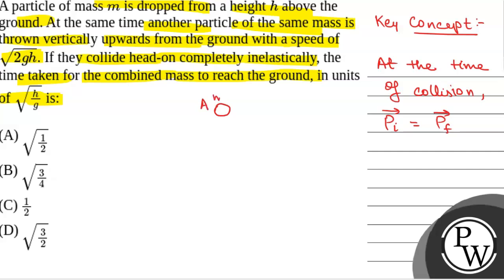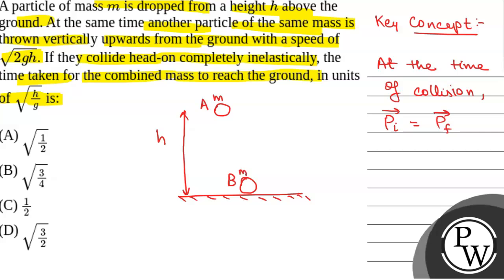Body A has mass m and is dropped from a height h above the ground — this is the ground, so this height is h. Another body B with the same mass m is thrown upwards with a velocity v equal to root(2gh).